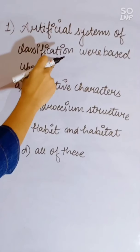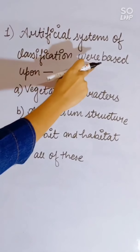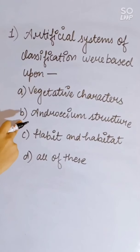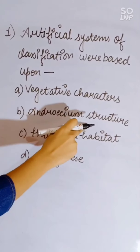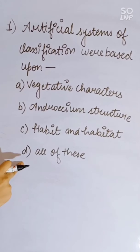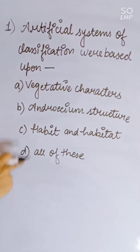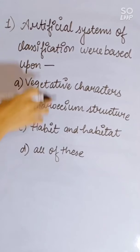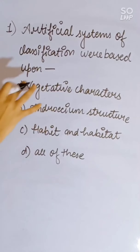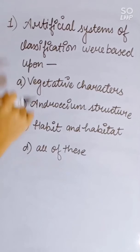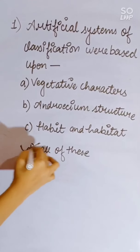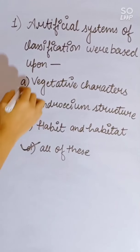Artificial systems of classification were based upon: vegetative character, androecium structure, habit and habitat, or all of these. All these characters were used in artificial classification systems. Correct answer is all of these.